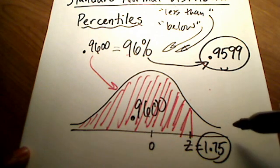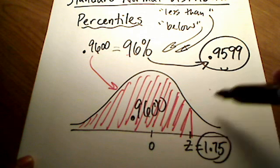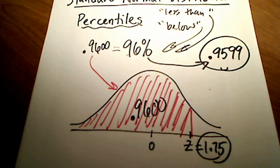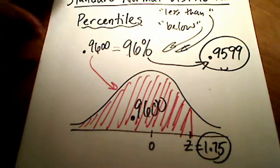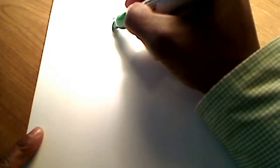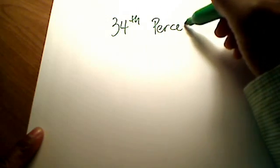A Z number of 1.75 that corresponds to this .9599. So sometimes on my Math Lab or in your book homework, it asks, what is the Z score that corresponds to a 96th percentile? Let's do one more percentile. How about I'm looking for the Z score that corresponds to the 34th percentile.